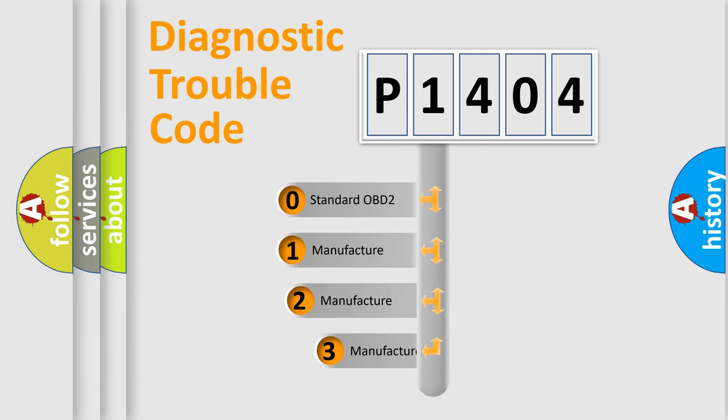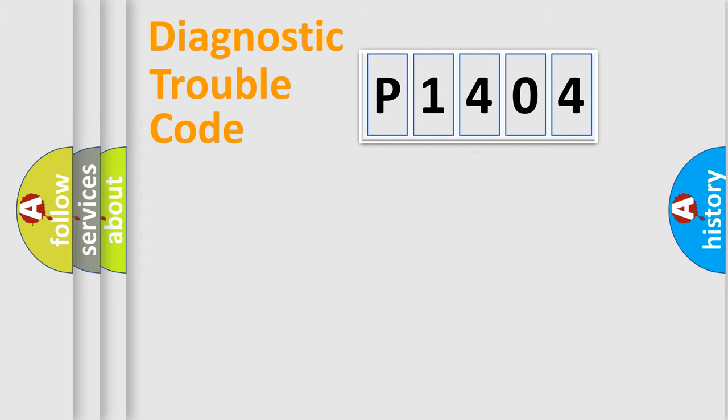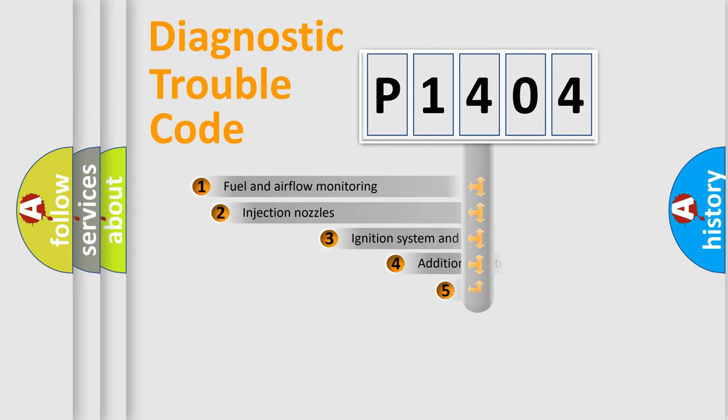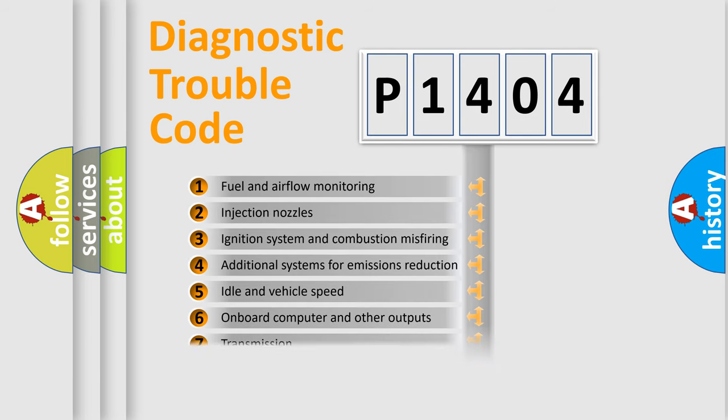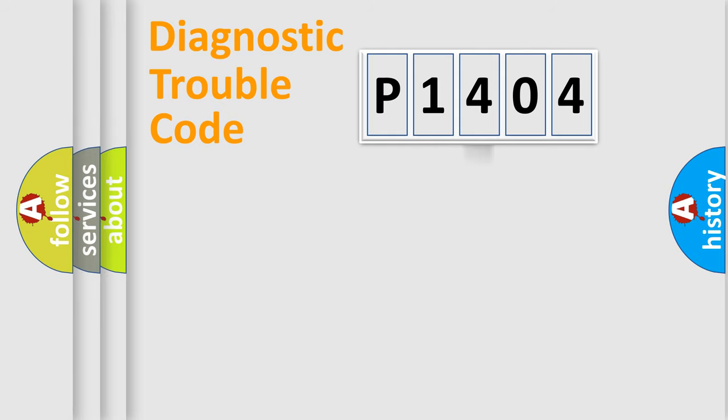If the second character is expressed as zero, it is a standardized error. In the case of numbers 1, 2, or 3, it is a more prestigious expression of the car-specific error. The third character specifies a subset of errors. The distribution shown is valid only for the standardized DTC code.